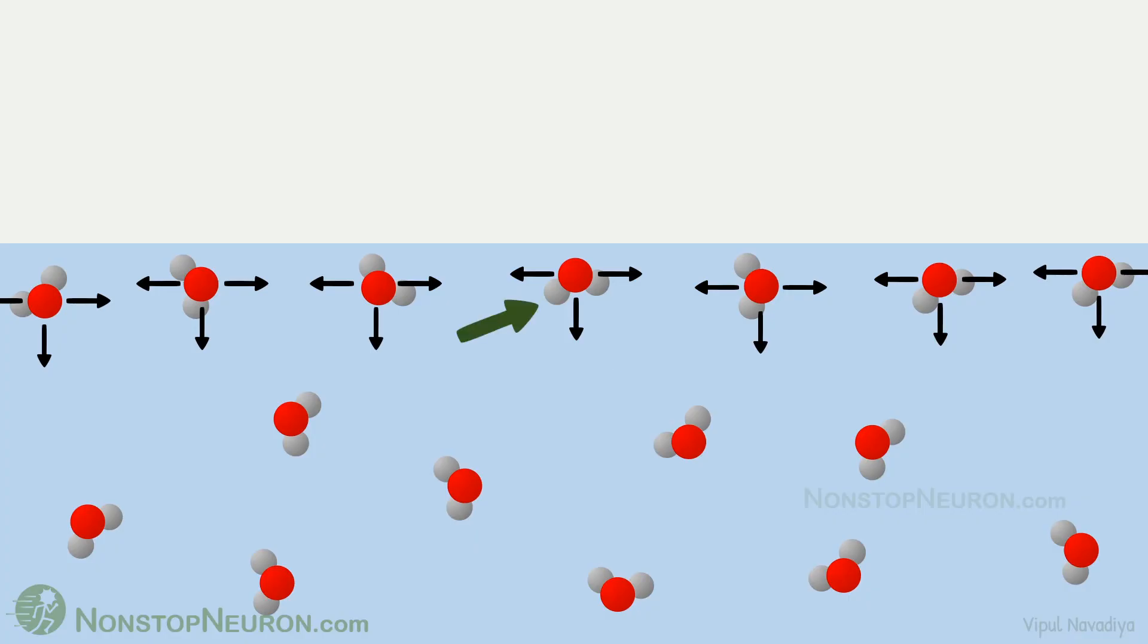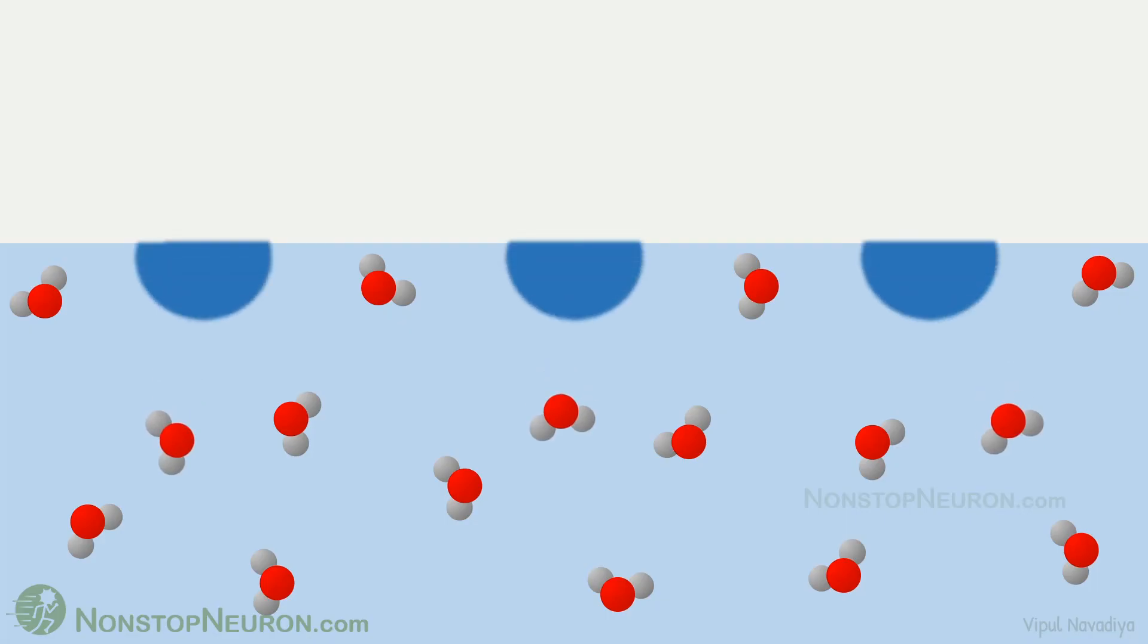However, the situation is different at the surface. These water molecules have other water molecules on the sides and towards the bottom. But there are no water molecules to pull them upward. So these water molecules experience net force towards the bulk water phase. This net force pulls water molecules deep in. Because of this, kind of vacuum is created on the surface. Due to this, water molecules that remain on the surface develop pull towards such areas all around. This puts them in state of tension which is called surface tension.